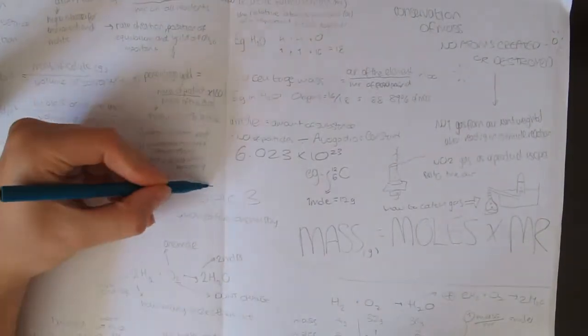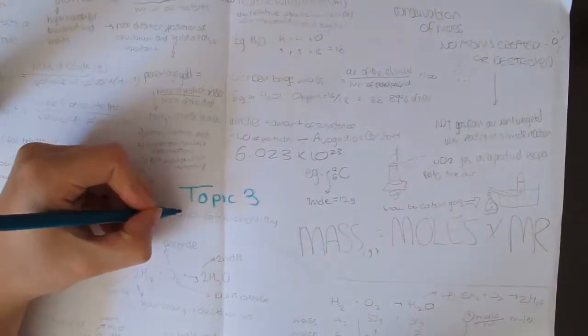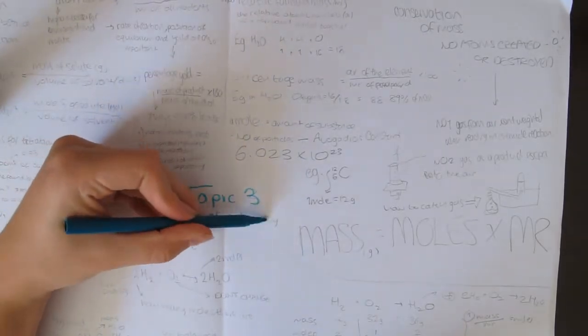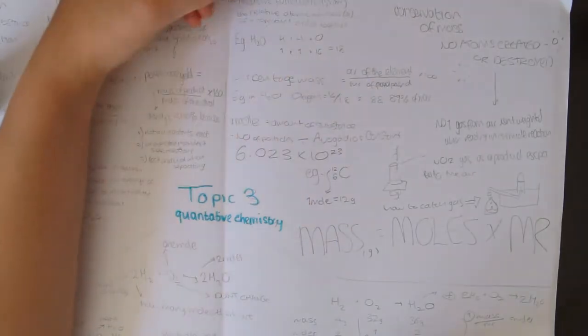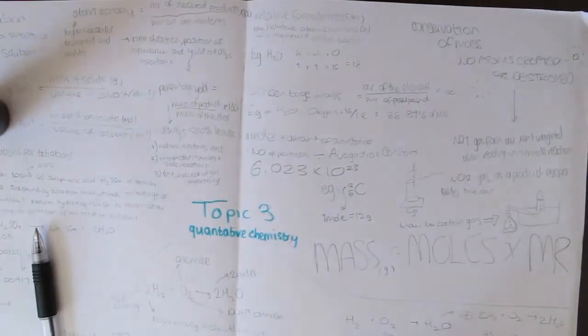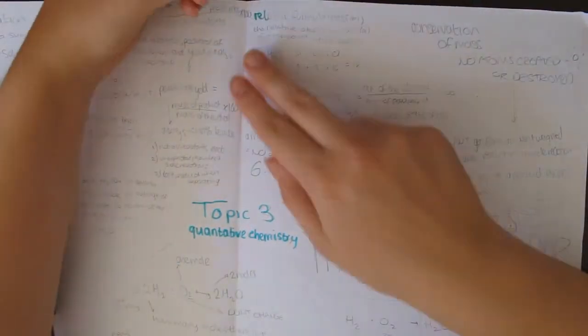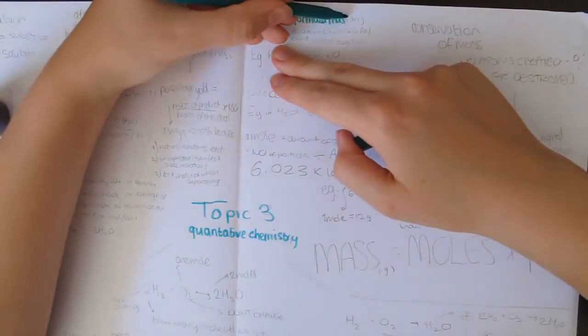The relative formula mass of a compound is the relative atomic numbers of a compound added together. For example, H2O, or water, is 2 hydrogens, which is 1 plus 1, plus an oxygen, which is 16. So the final compound is 16 plus 2, which is 18.